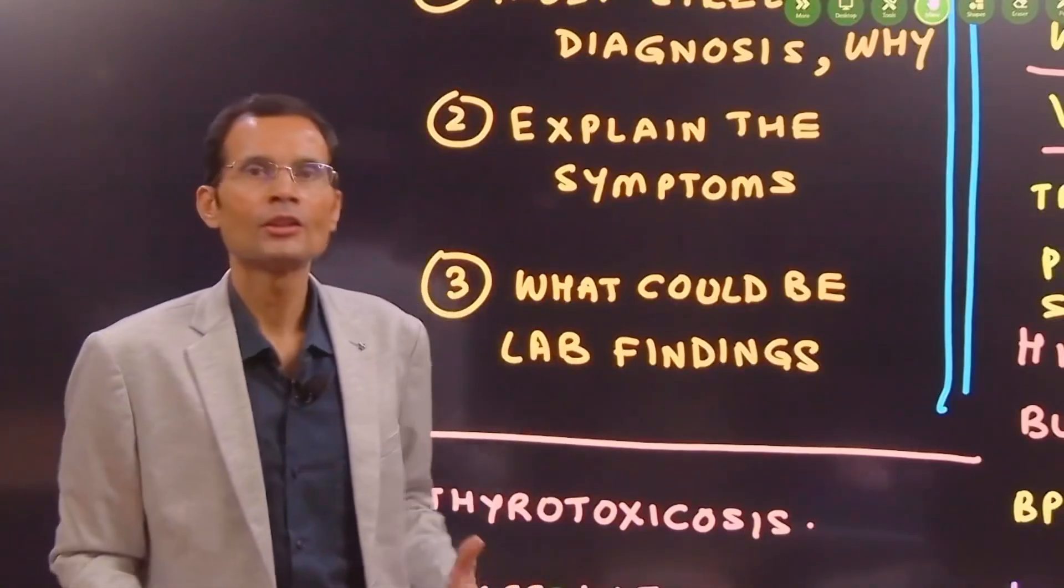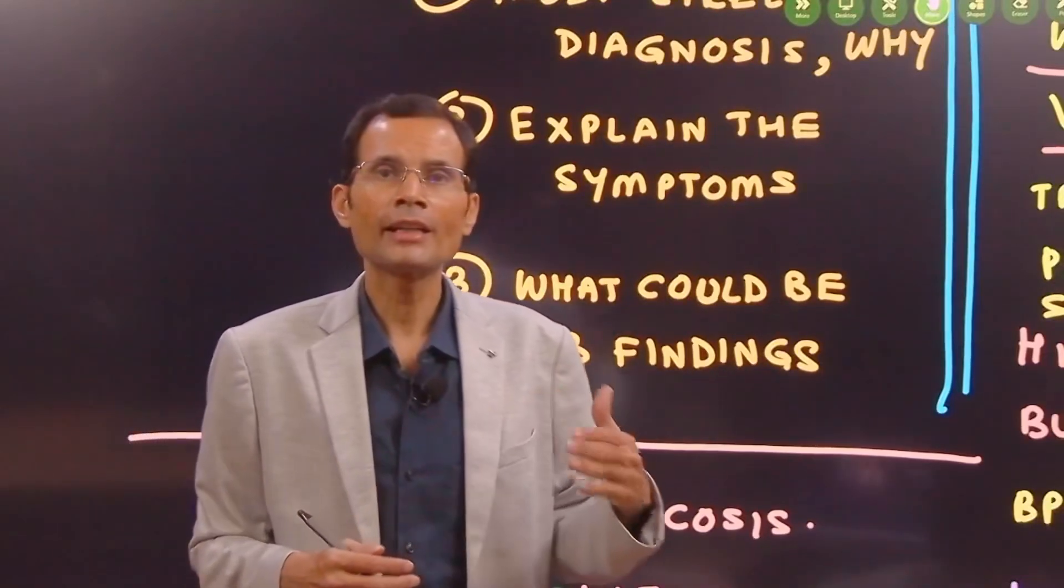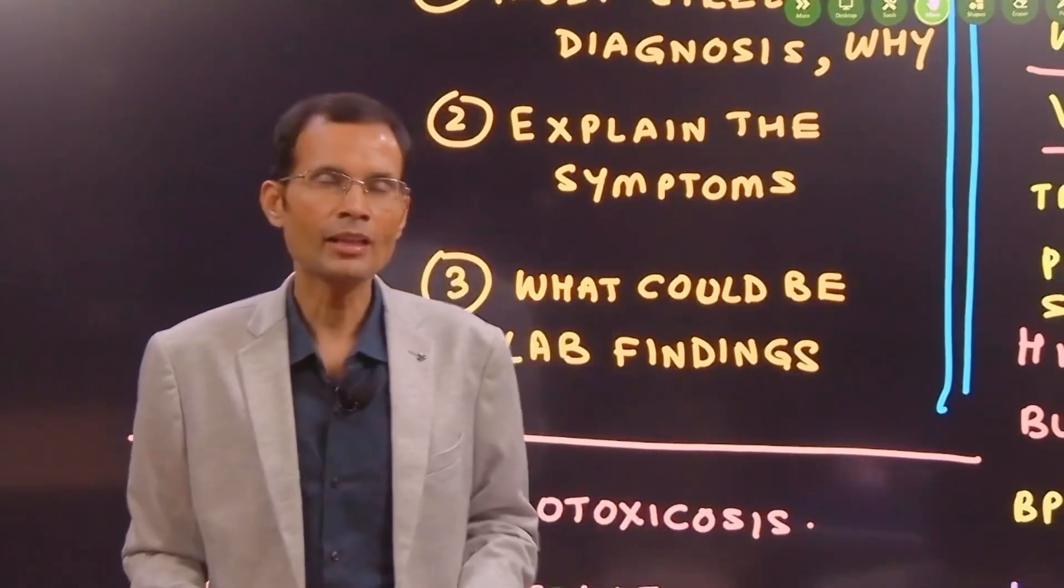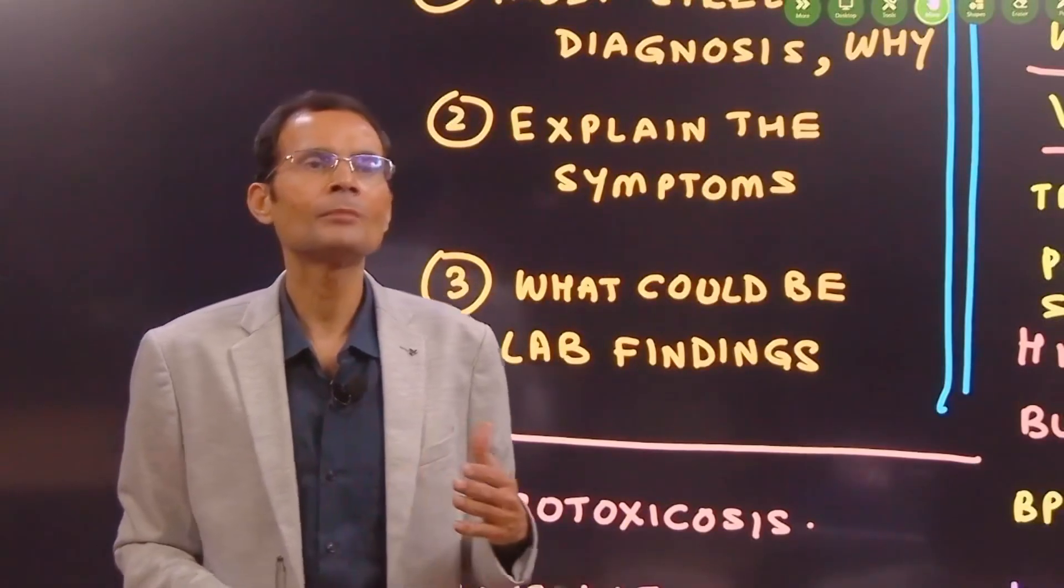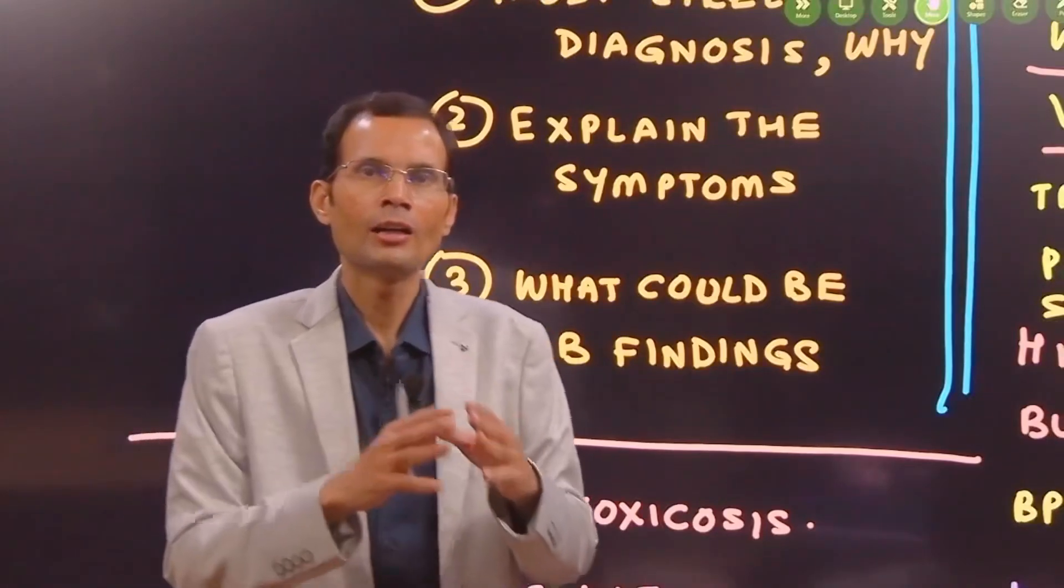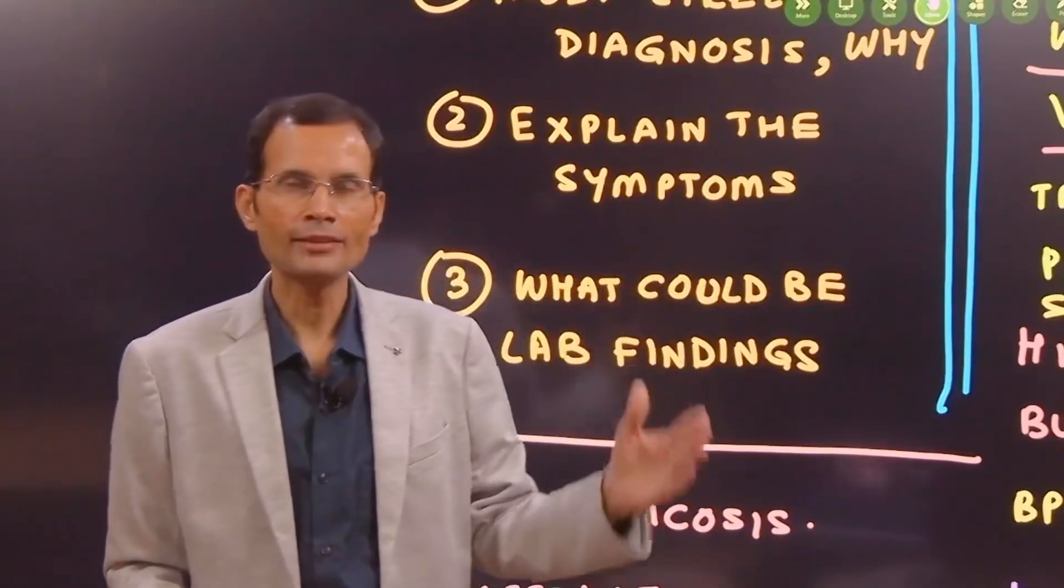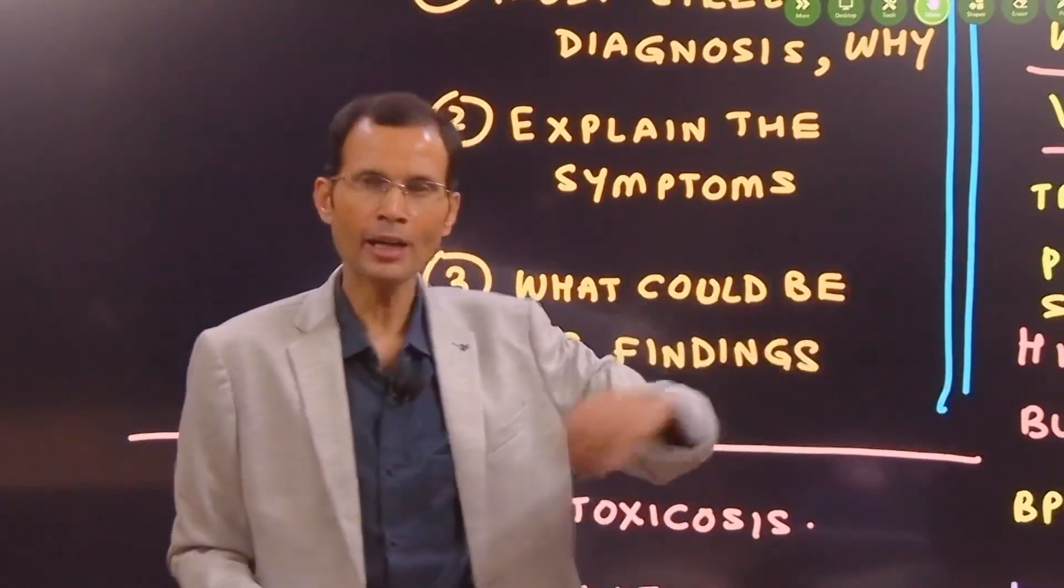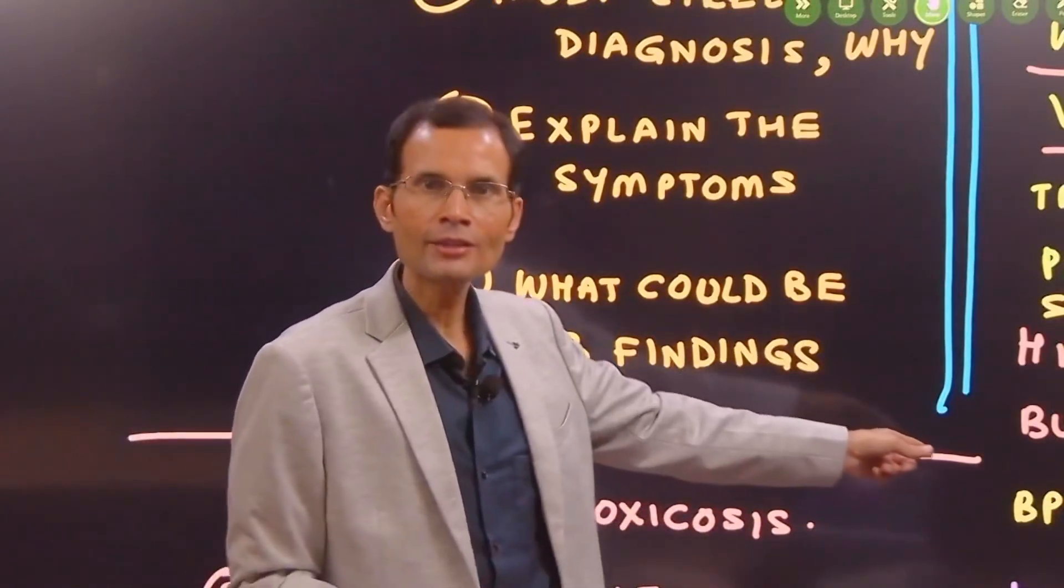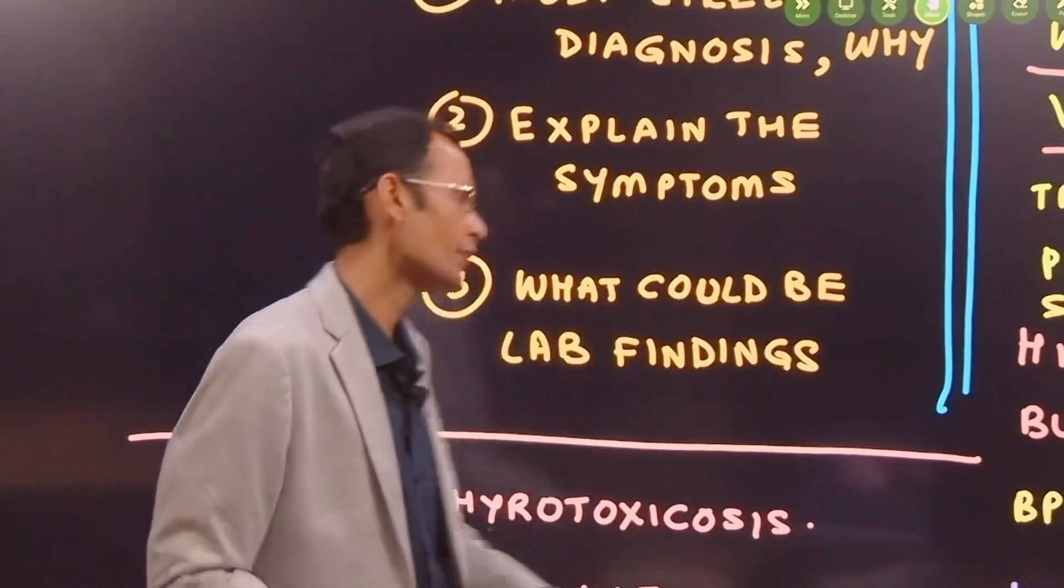And finally, what could be the lab findings? So, most commonly done are the T3, T4, TSH. T3 and T4 will increase and by negative feedback, the TSH levels will decrease. That's classically seen in this particular condition. Apart from that, radioiodine uptake and other lab investigations are done. You can also perform other investigations like fasting and postprandial blood sugar to rule out the diabetes mellitus or morning 8 a.m. cortisol levels to rule out the Cushing's disease and peptic ulcer. Of course, there are very different types of investigations.